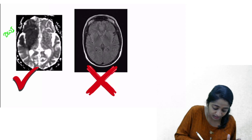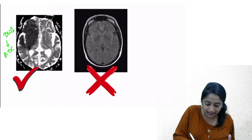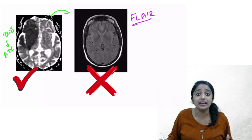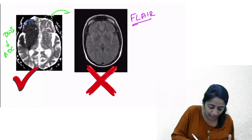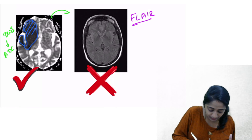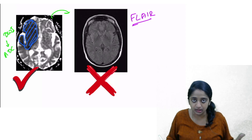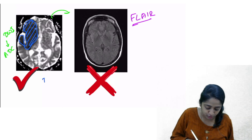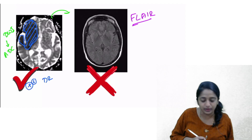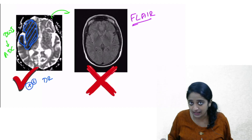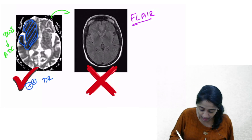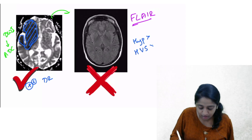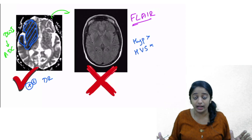In the ADC map, I'm seeing hypointensity following a territorial pattern involving the cortex and white matter. The corresponding diffusion-weighted image is bright — so I call it diffusion restriction. There is change in the diffusion-weighted sequence. Now looking at the FLAIR image, am I seeing hyperintensity? No. Am I seeing the hyperintense vessel sign? Again, no. So there is no change in FLAIR — FLAIR appears apparently normal.